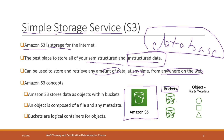Amazon S3 organizes data into different folders which they call buckets. Buckets are logical containers that help you organize your data. Within each bucket you can create folders or upload data directly. All the data stored in S3 are called objects — which is different from a Python object. An object can be a text file, an image, or a video — any type of data — and we will see that during today's lab.